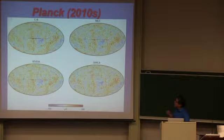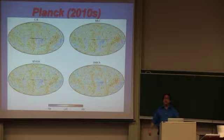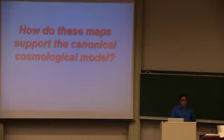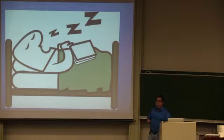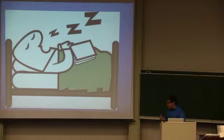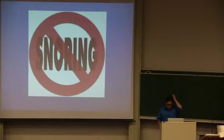What I like to do is go back and look at the properties we're seeing on the largest angular scales, not the smallest angular scales. If we were looking at small angular scales, the talk would probably be about how these maps support the canonical cosmological model — and by this point that would lead you to be snoring by the end of the talk. But what I'd like to do instead is look at how these maps challenge the cosmological model. So please, no snoring.